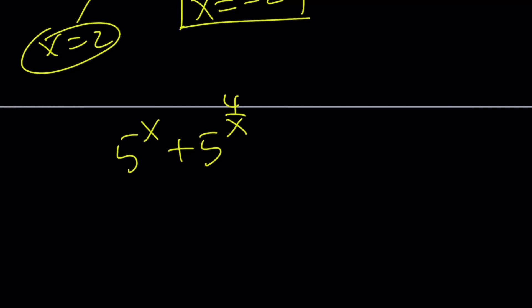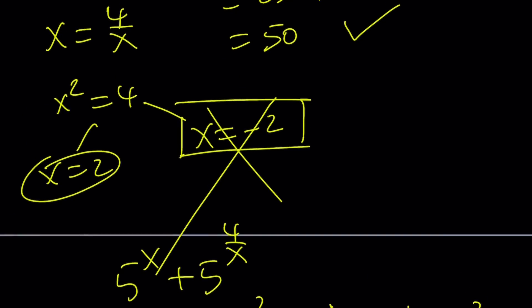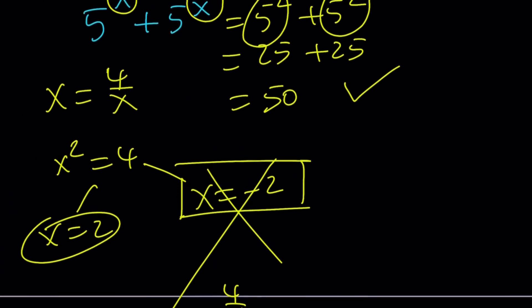5 to the x plus 5 to the power 4 over x. If x equals negative 2, then 5 to the power negative 2 and 5 to the power negative 2 is 1 over 25 plus 1 over 25. I don't think this is going to add up to 50. It's actually 2 over 25. So unfortunately negative 2 is not a solution. There is no negative solution to this equation.